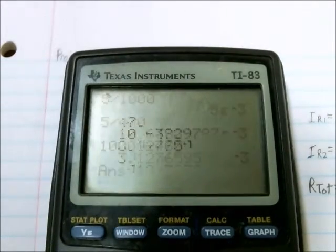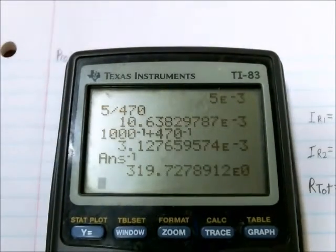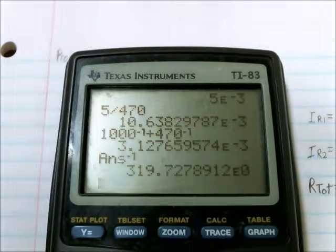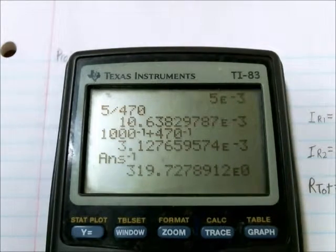And there's the collective resistance. So 320 ohms would be the equivalent resistance of the two resistors.